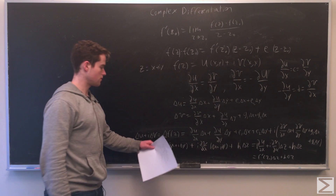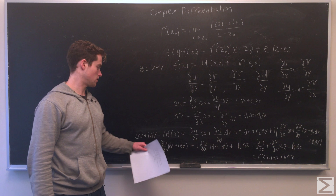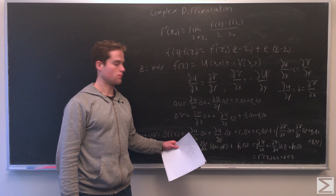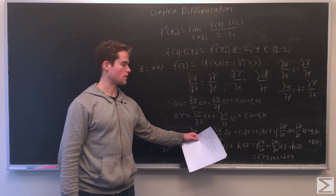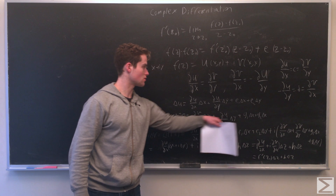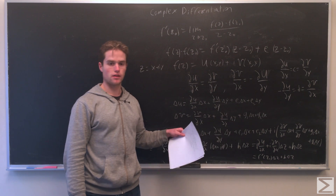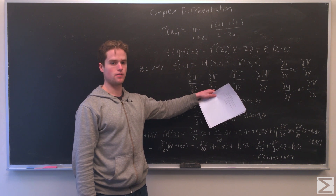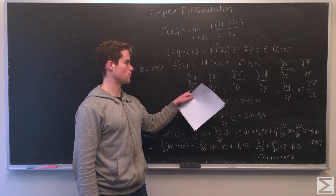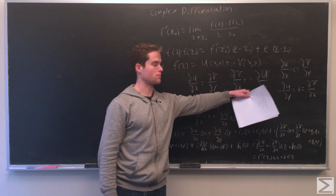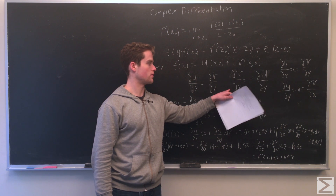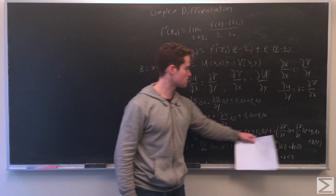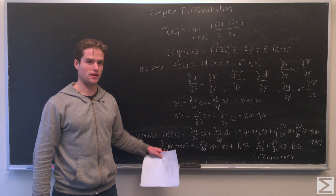Writing out delta f(z) at z0, which is just delta u plus i delta v, we have partial u partial x times delta x plus the full expansion, plus i times the full expansion for delta v. Making use of the Cauchy-Riemann equations, we substitute partial v partial y with partial u partial x, and partial u partial y with partial v partial x, making those substitutions to simplify this long expression into something simpler.